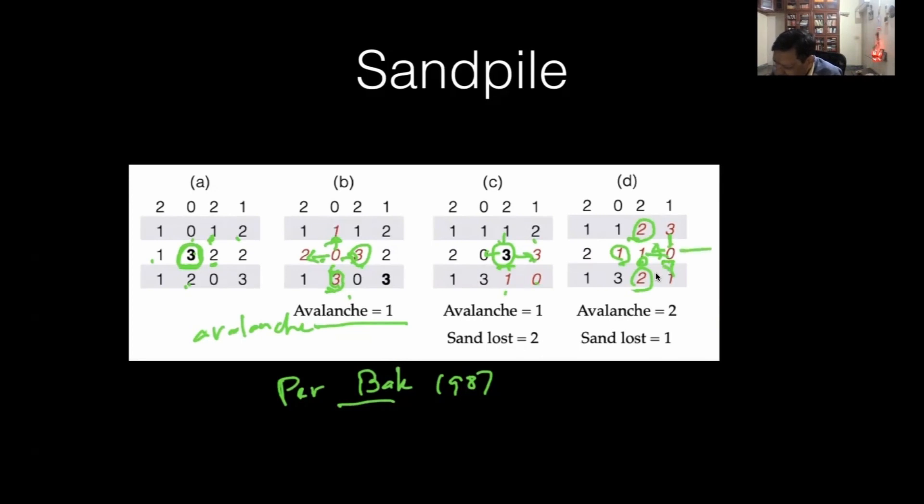This zero becomes one, and one is outside the boundary. So one sand is gone. If sand goes outside the boundary, it's lost. This is called dissipation. The number of avalanches here were two, and sand lost is one.